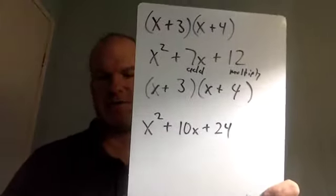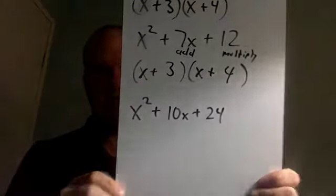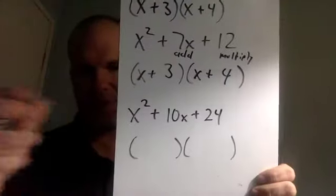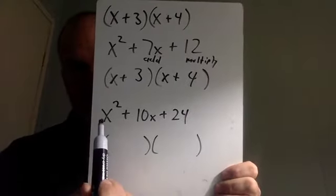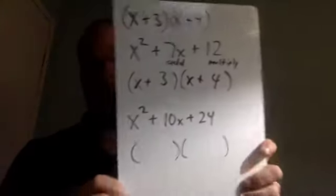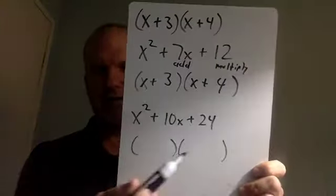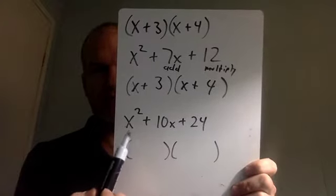Let's try one from scratch. Let's say we have X squared plus 10X plus 24. We have to factor this, so our answer is going to be two parentheses. Note: this adding and multiplying trick only works if it's a 1X squared. If you put a 2 or a 3 in front of your X squared, this trick doesn't work and it becomes significantly more difficult. For now, we're only going to have X squared.